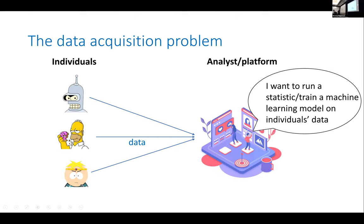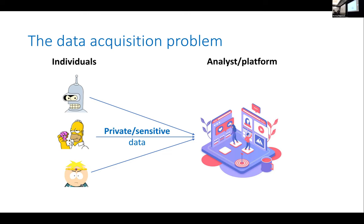What I want to get across in this work is the point of view of a platform or analyst who wants to run a statistic or train a machine learning model. They're going to use user data — maybe as an analyst I can create a study and have people participate, using their data to train my statistic. If I'm a platform with users, I can use their data to train my model. In a lot of these situations, the analyst or platform is dealing with potentially private and sensitive data.